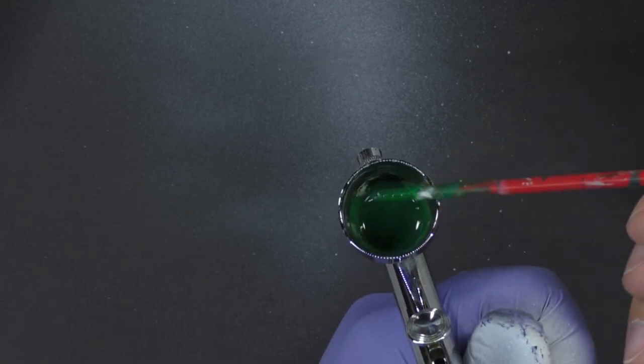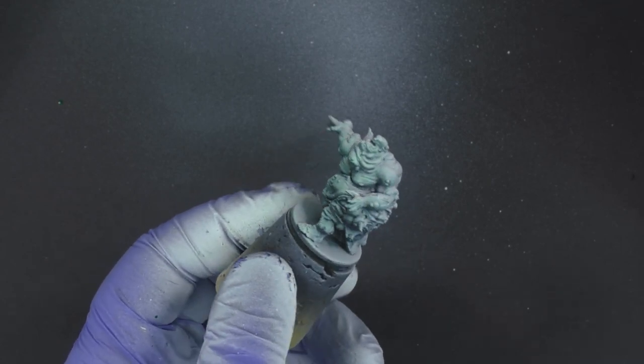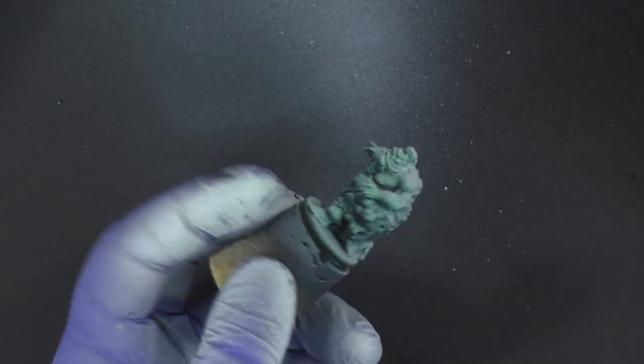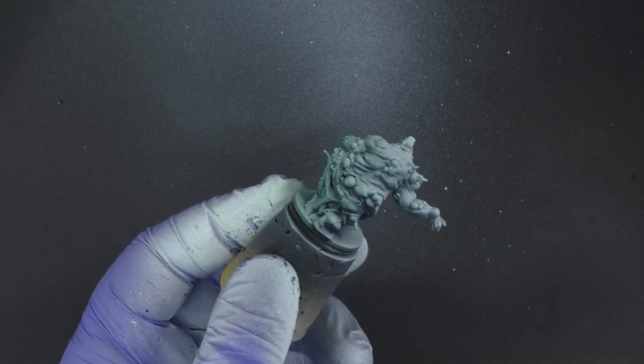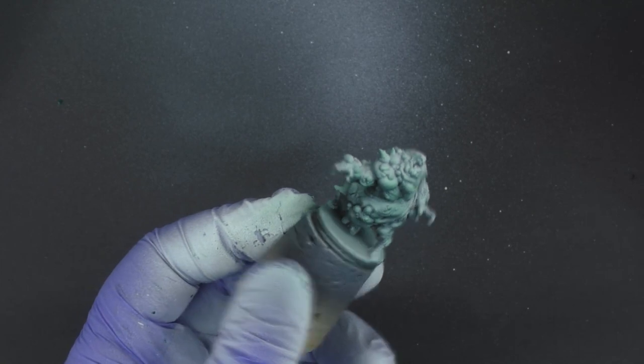You want to make sure you thin down your paint so not only it flows through the airbrush, but we also want a very transparent layer on the model. The goal here is to put a very thin coat to start off with. You can see here we're just barely tinting the miniature green.